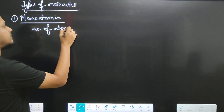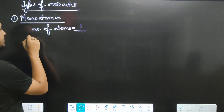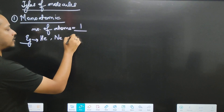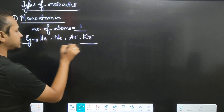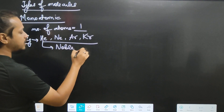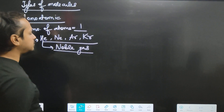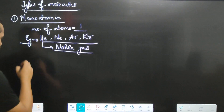Number of atoms: 1 — these are called monoatomic molecules. Examples are noble gases: helium, neon, argon, krypton. Noble gases give examples of monoatomic molecules.